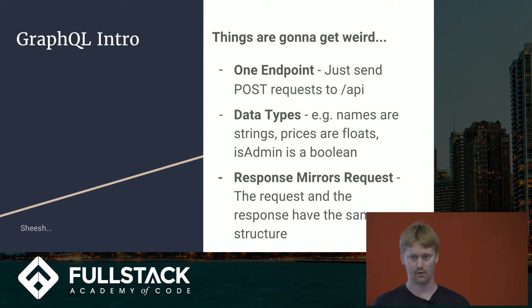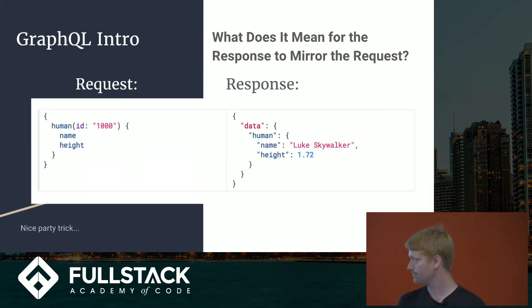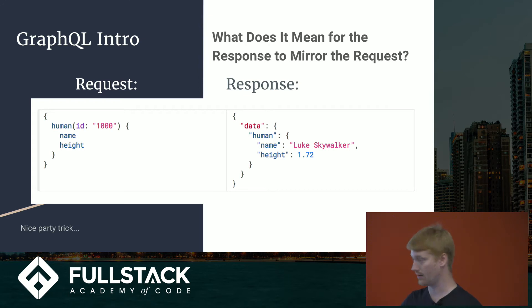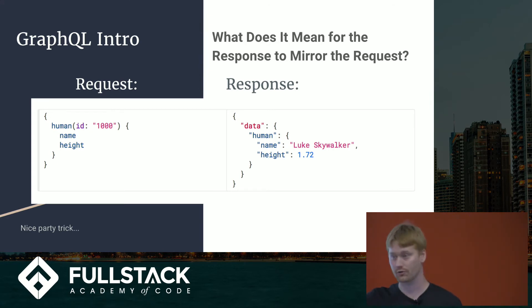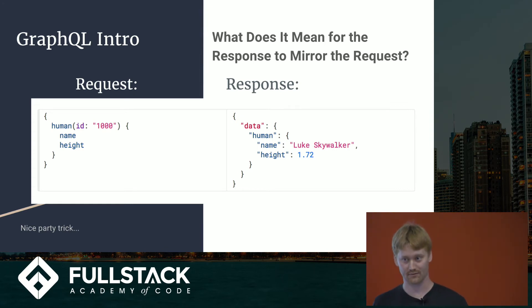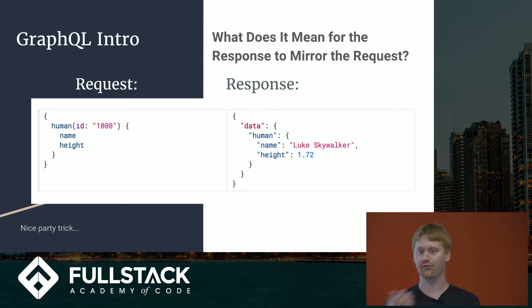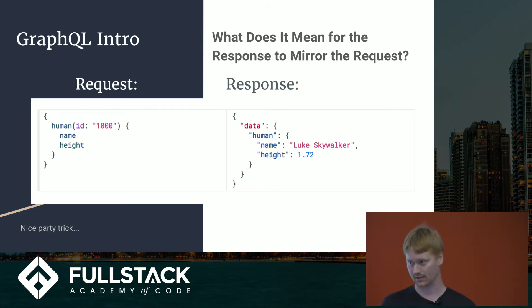The response mirrors the request. This example is pulled directly from the GraphQL docs: you're requesting a human with ID 1000, and what you want from that human is the name and the height. Notice how the structure of the response is the same — there's a data key at the top, then human, then name and height. Because the structure mirrors the request, you can create an object on the front end with the fields ready to go, and as soon as you make your query they're all filled in without manipulation.